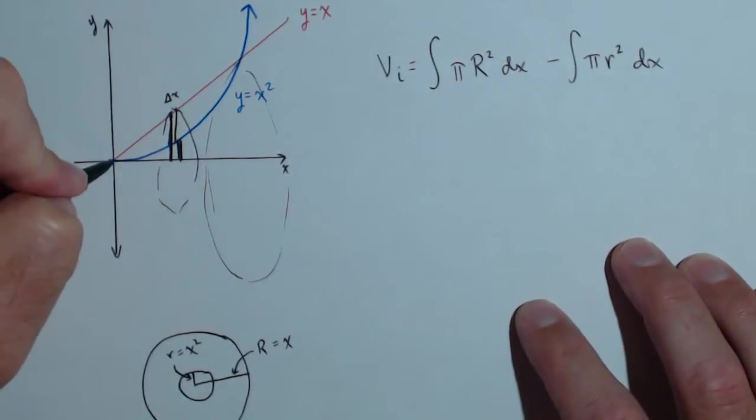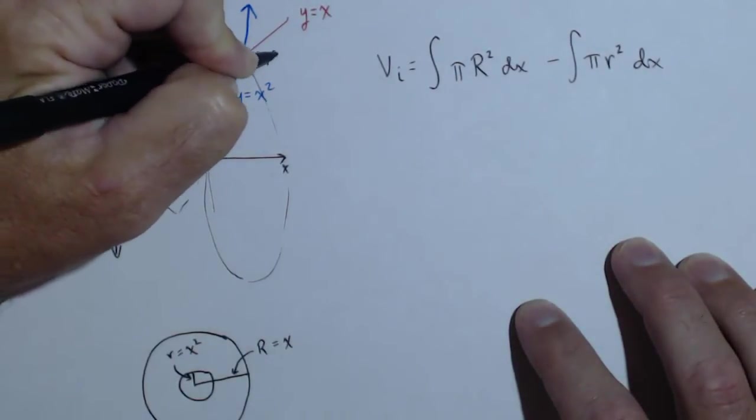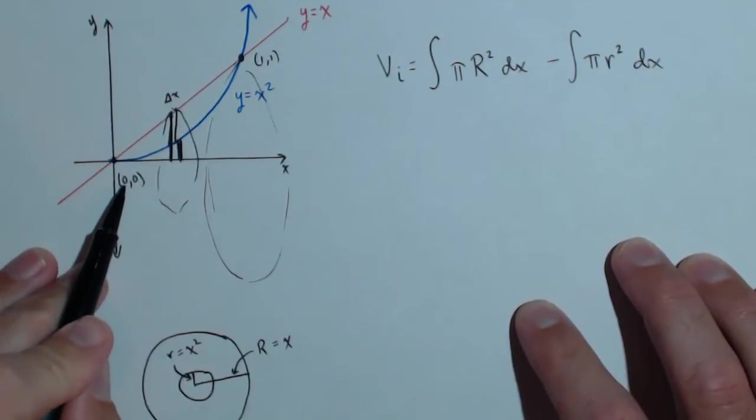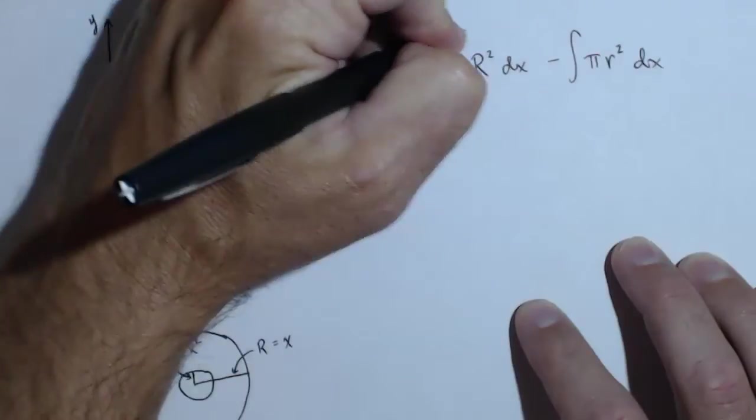We need some limits on these. Well, these graphs intersect at 0, 0 and 1, 1. And since we're going to use the x values, x is going to range from 0 to 1. And that's for both of them.